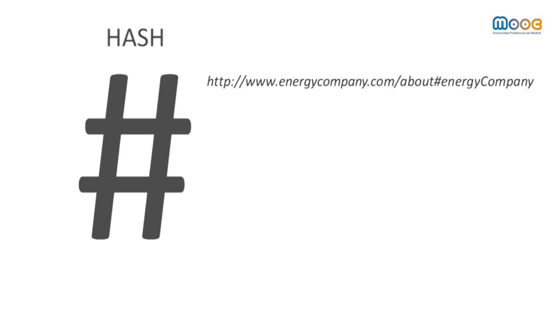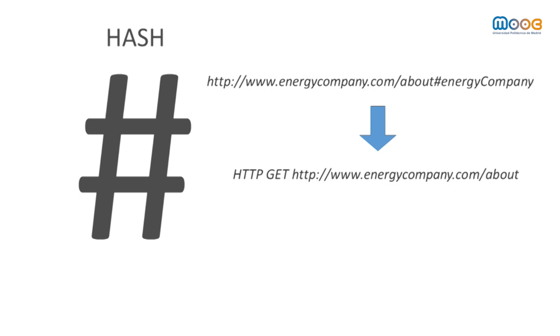When to use hash or slash? When using hash URIs, when we make a request to the server to access a resource, the fragment identifier is removed and we retrieve the whole document from the server, instead of which we have to search for the resource we are interested in.